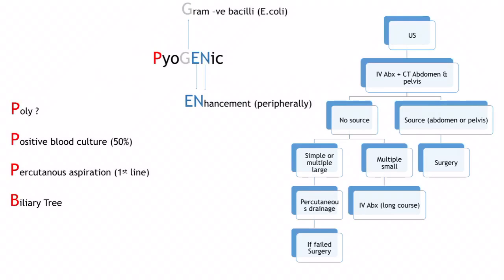Before ultrasound, you can suspect a liver abscess based on clinical and X-ray findings. Three X-ray signs: elevation of the right hemidiaphragm, right pleural effusion, and right atelectasis. On ultrasound, you'll see a hypoechoic lesion with possibly well-defined borders. You then take blood cultures, give IV antibiotics, and do CT of the abdomen and pelvis. If an abdominal/pelvic source is identified, the patient may need surgery. If no source, CT criteria guide whether to do percutaneous drainage.